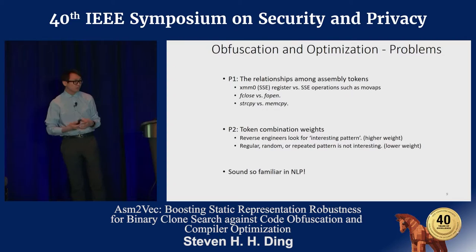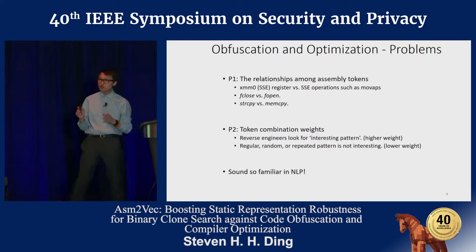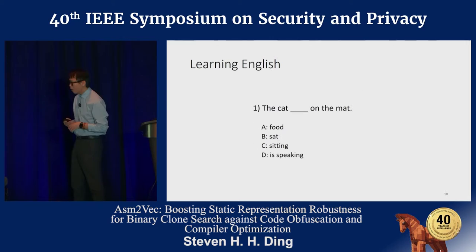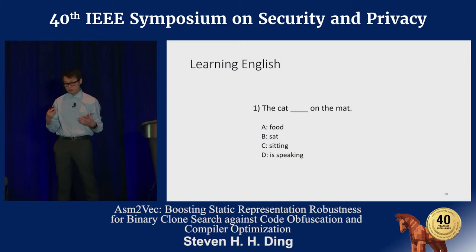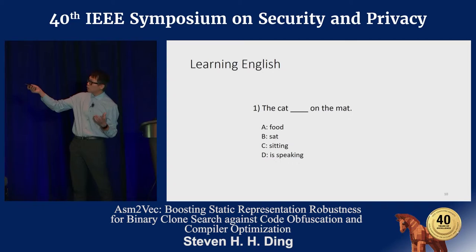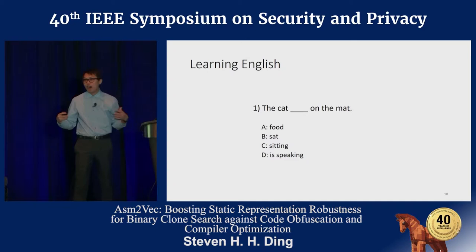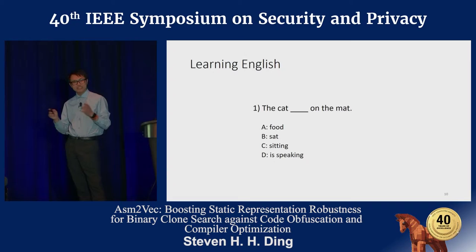These two problems are quite similar to problems in natural language processing using machine learning. We want to build a neural network to address these two challenges. Before jumping into how we build this network for assembly language, I want to talk about how I learned English. I'm not a native English speaker - the way I learned English was quite brutal: we did a lot of multiple-choice exercises in exams, trying to complete a sentence with different options to find the right word that fits the context and syntax of the sentence.